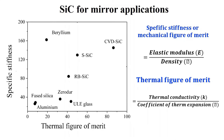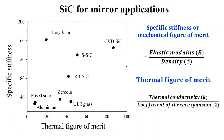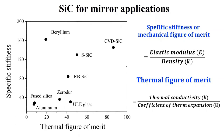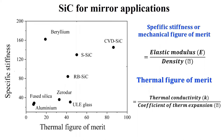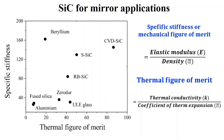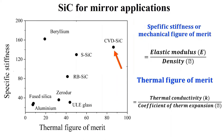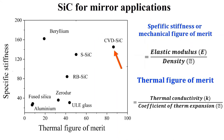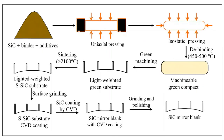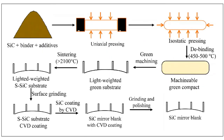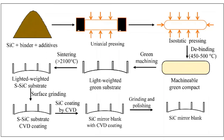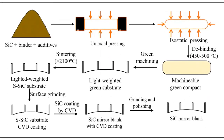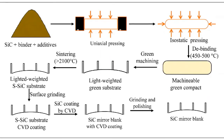Silicon carbide space mirrors score over the existing Zerodur, beryllium, and other mirrors because of several advantages, including higher specific stiffness and thermal figure of merit. This diagram typically shows various unit processes for fabrication of silicon carbide mirror blanks.